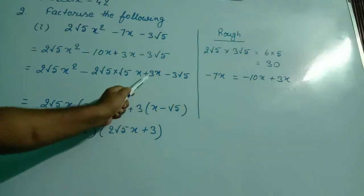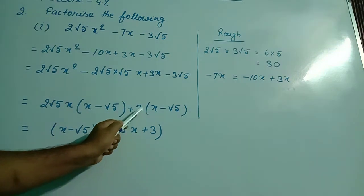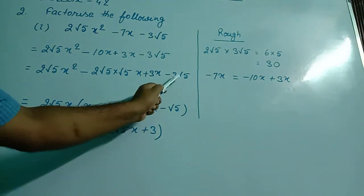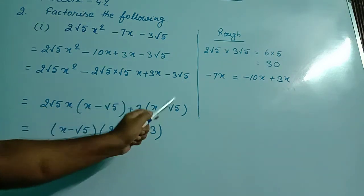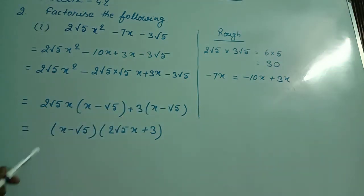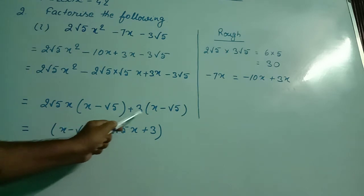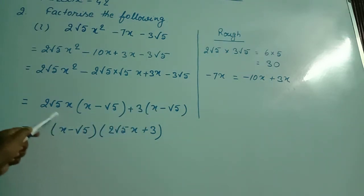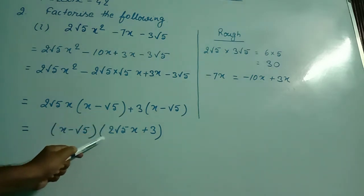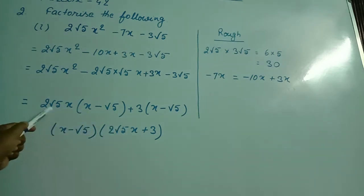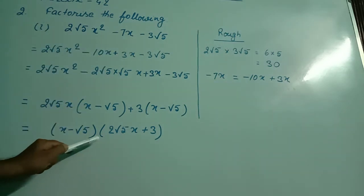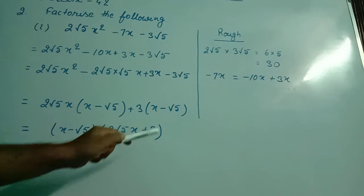From the last two terms, I took 3 as common, so x is left minus root 5. Now this is x minus √5, x minus √5 — this is common. So I wrote (x - √5), and what is outside the bracket — 2√5x + 3 — I wrote inside the bracket. The factors of the given expression are (x - √5)(2√5x + 3).